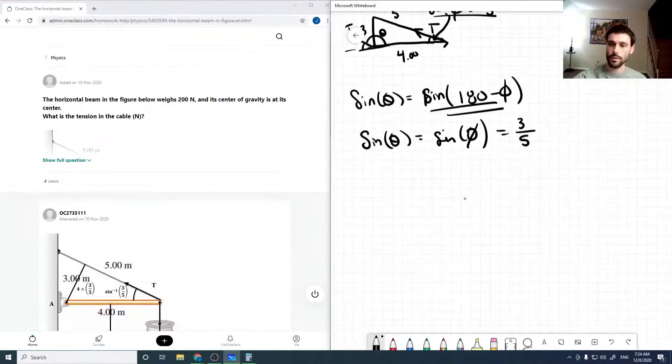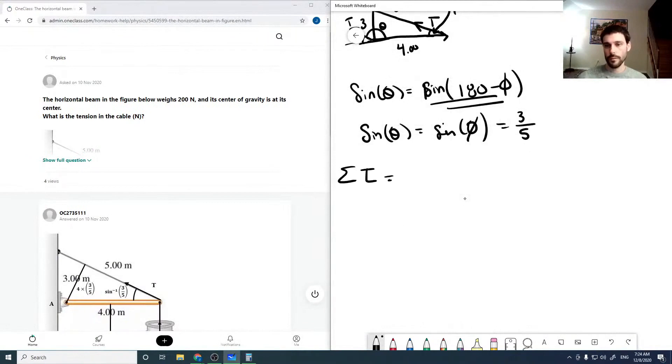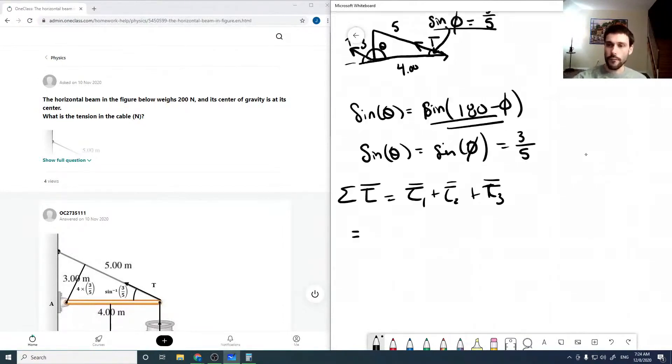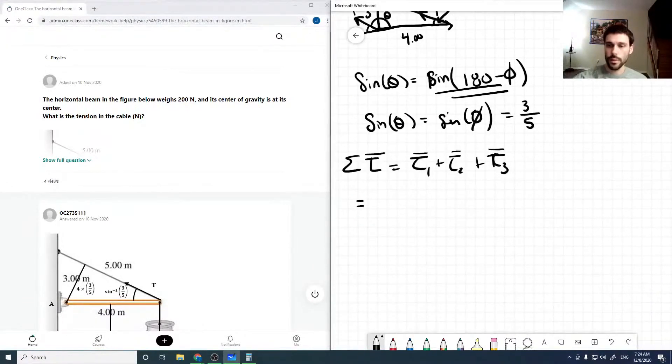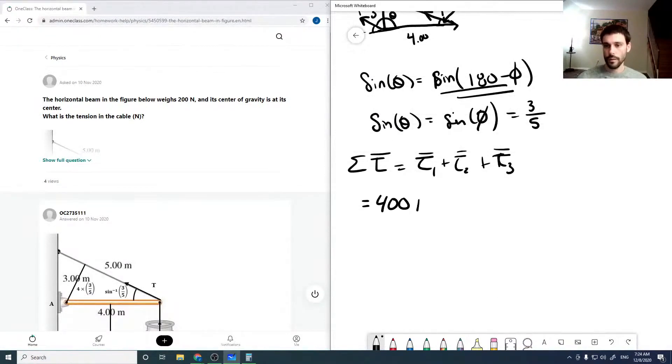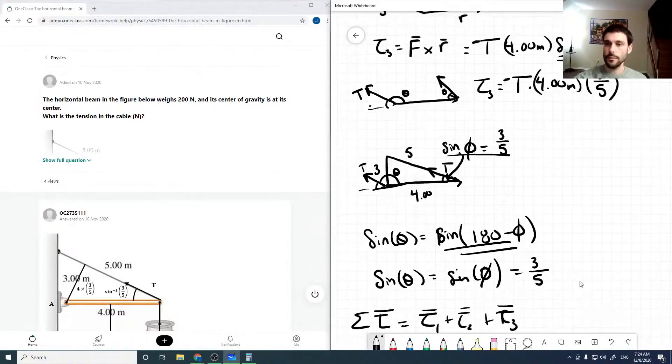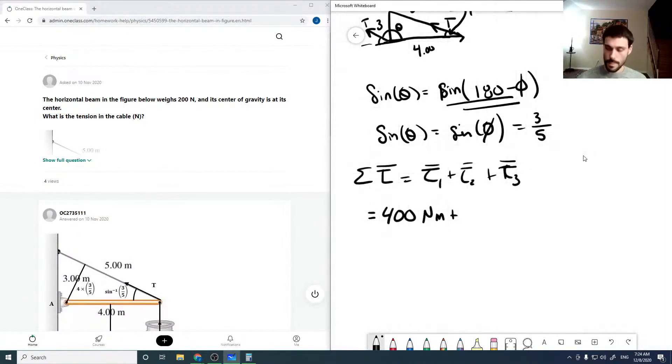Summing up all our torques equals torque one plus torque two plus torque three. Our first torque was positive, 400 newton meters. Our second torque was also positive, 1200 newton meters. Our third torque was negative and was equal to the tension times four meters times three over five, and that all equals zero.